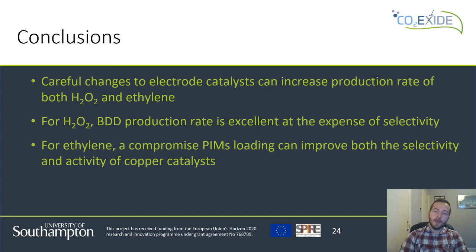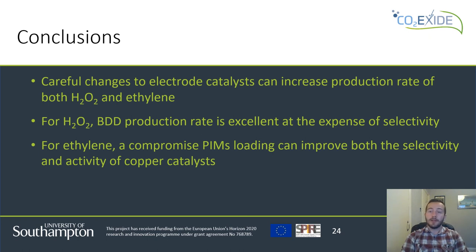So as a brief conclusion, we've looked at different materials and catalyst surface modifications to increase the selectivity and reaction rates for water oxidation to peroxide and for carbon dioxide reduction to ethylene. For hydrogen peroxide, BDD electrodes give an excellent production rate, although this does come at a cost to the selectivity. But the benefits outweigh the cost here, particularly when we're thinking about upscaling. For carbon dioxide reduction, we've improved the selectivity of copper gas diffusion electrodes using this porous PIMs layer, although we do have to be careful with the compromised loading in order to gain the benefits of this porous layer without having significant costs to the hydrophobicity.